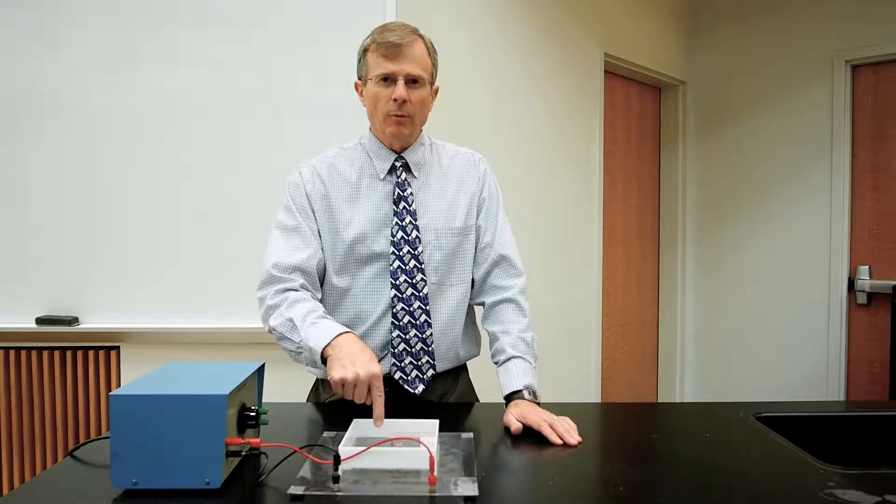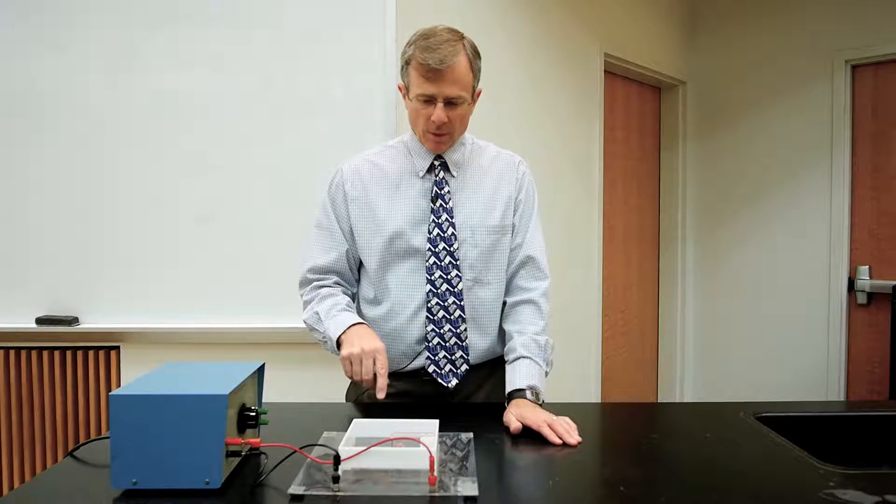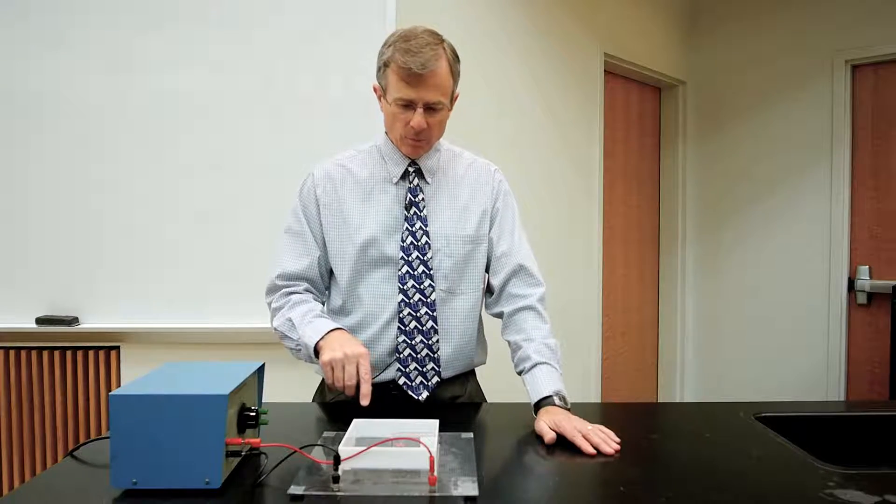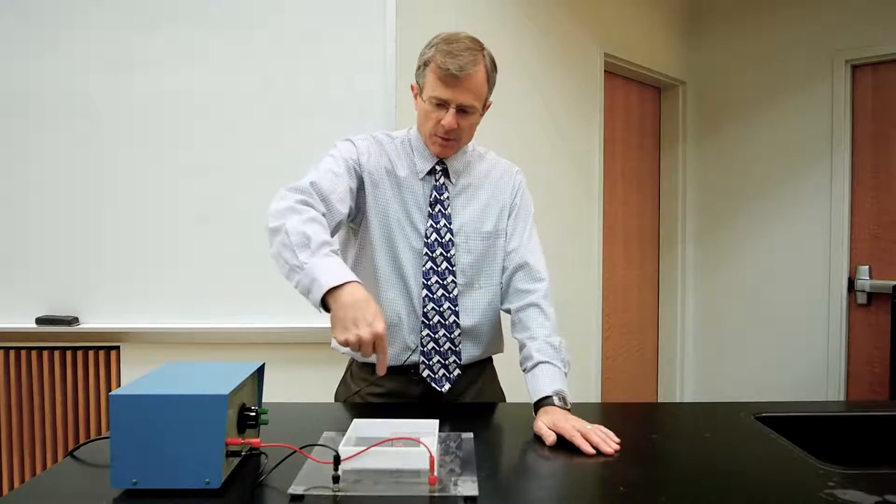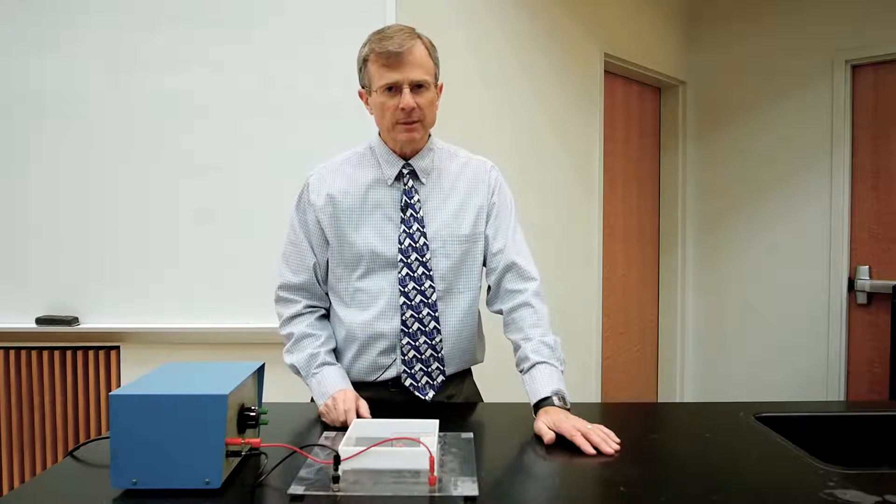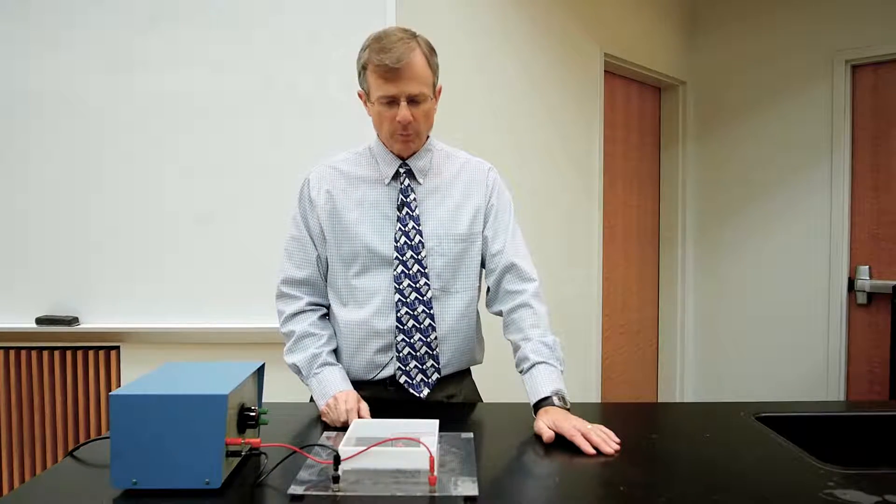The current in that wire will be down, and according to the right-hand rule, if we put our thumb in the direction of the current, then our fingers will curl in the direction of the magnetic field that that wire will produce.